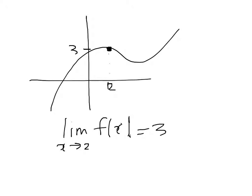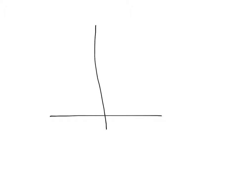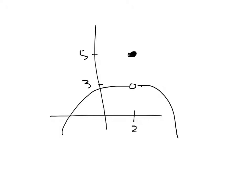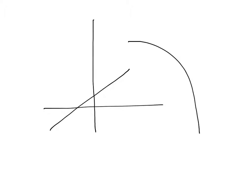Sometimes you get weird things going on - a function that has a hole there. Even though there's a hole, the limiting value is still 3. The limit as x tends to 2 is still 3, even though the function might do something strange like having its actual value up at 5. But the limit is still 3. What you can't have is a jump, where the limit as x tends to 2 does not exist because approaching from the left gives a different y value than approaching from the right.